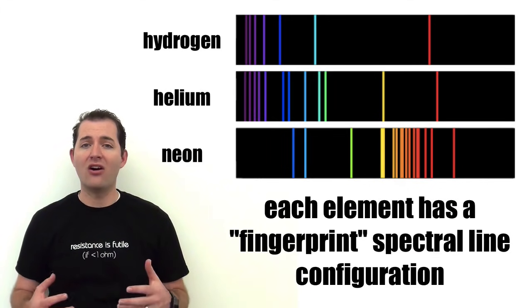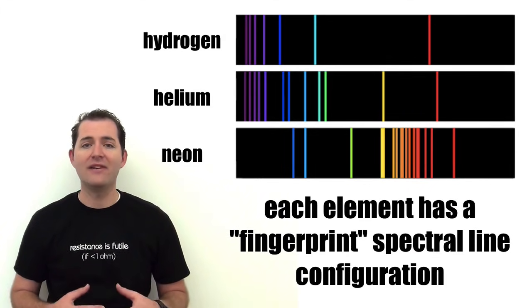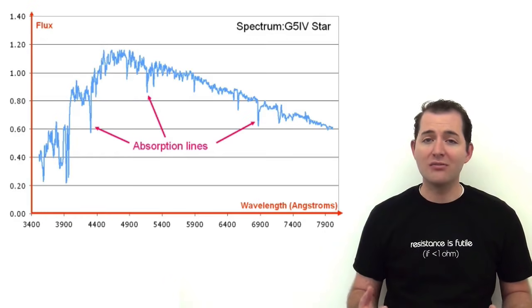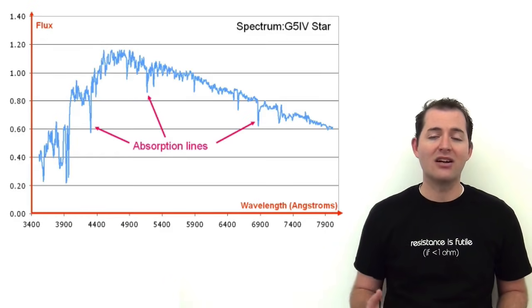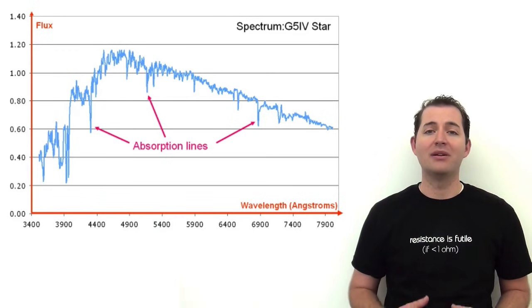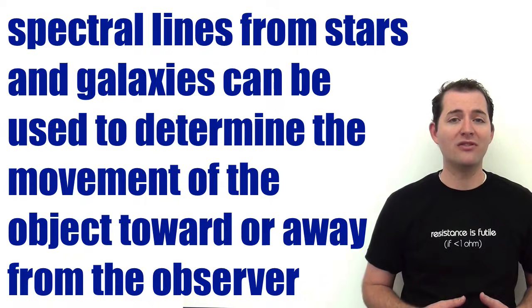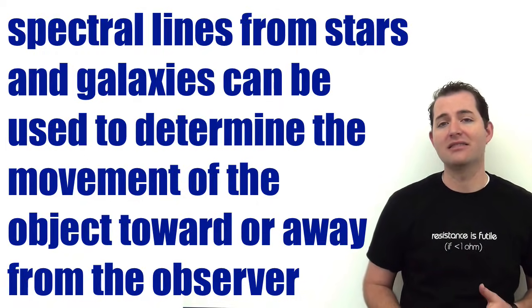It's important to understand that all objects that emit light give out specific spectral lines. These spectral lines help astronomers to identify what elements are inside of stars or galaxies, but they can also be used to tell if that object is moving away or moving toward the observer based on the movement of those spectral lines.